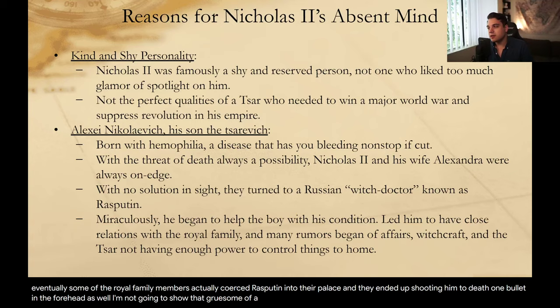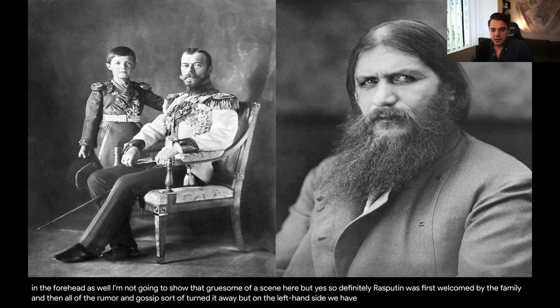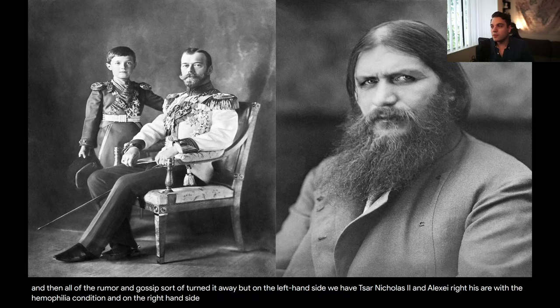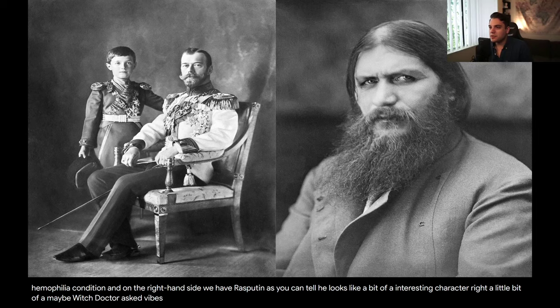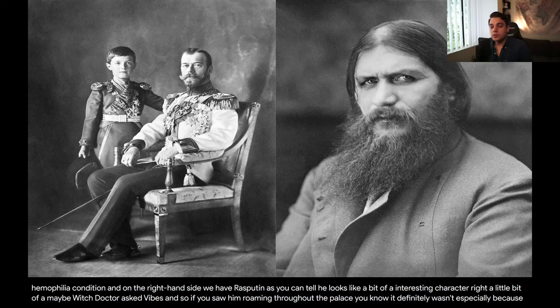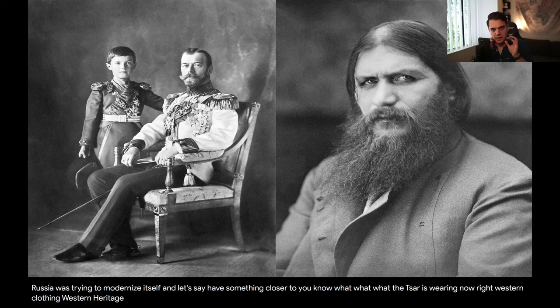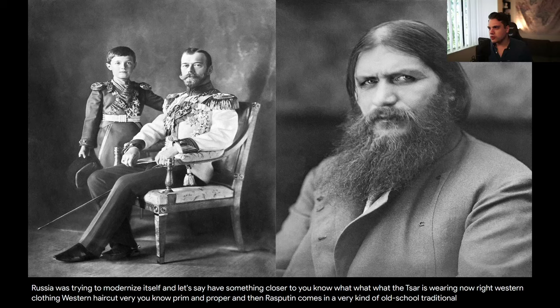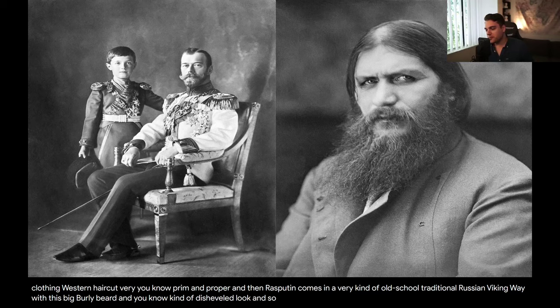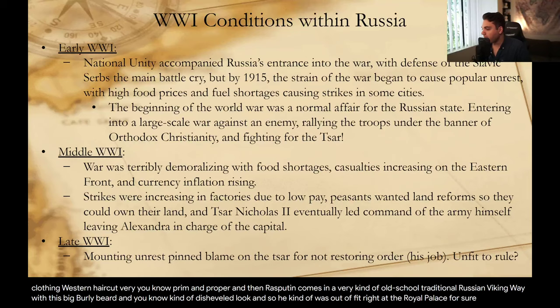One bullet in the forehead as well. Rasputin was first welcomed by the family and then all of the rumor and gossip turned things away. On the left-hand side, we have Tsar Nicholas II and Alexei — his heir with the hemophilia condition. On the right-hand side, we have Rasputin. As you can tell, he looks like a bit of an interesting character — a maybe witch-doctor-esque vibe. And if you saw him roaming throughout the palace, especially because Russia was trying to modernize itself, it definitely wasn't the best sight. Rasputin coming in a very old-school traditional Russian way with his big burly beard and kind of disheveled look — he was out of fit at the royal palace for sure.